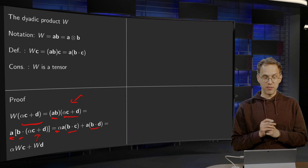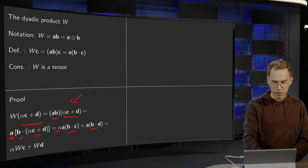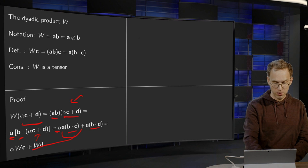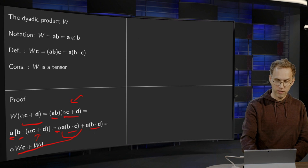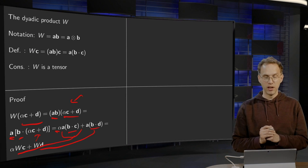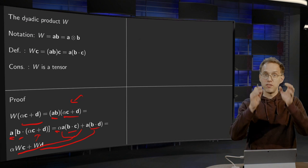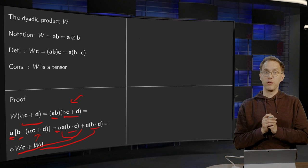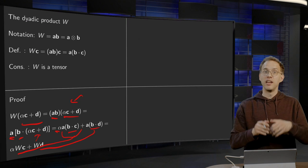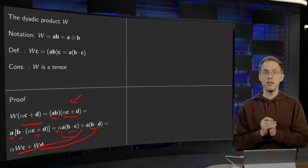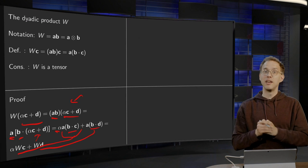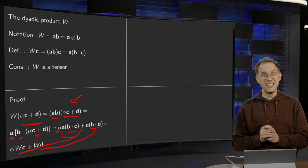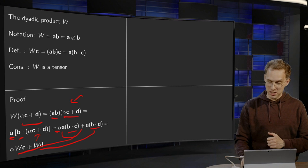And now we see that we can rewrite this as alpha. What we have here is just W times C by definition and what we have here is just by definition W times D. So, we see indeed W working on alpha C plus D equals alpha times W working on C plus W working on D. So, W is indeed linear, so it is a tensor.